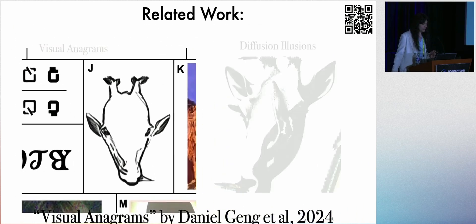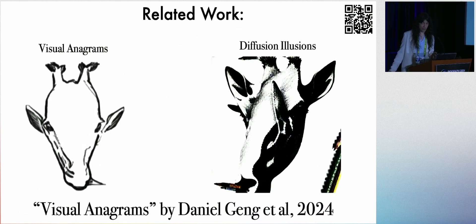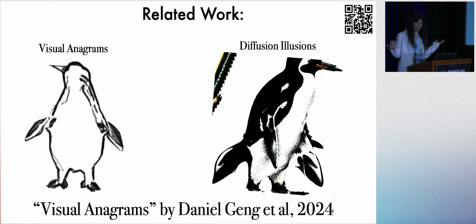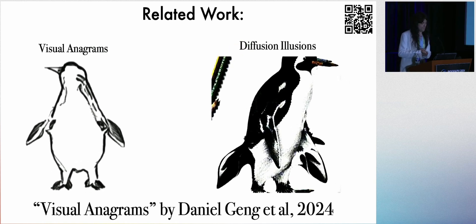One particular one that's interesting is one that actually came after our paper, called Visual Enneagrams. And they attempt to do something fairly similar, where if you flip this giraffe upside down, we can get a penguin. So theirs came after ours, and it's pretty interesting, but it can't do overlay illusions. That's out of the scope of their algorithm.